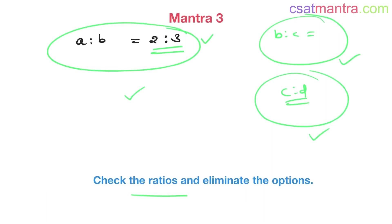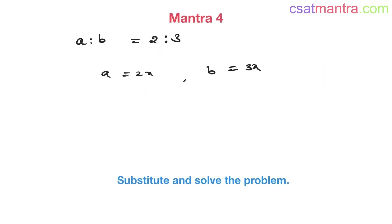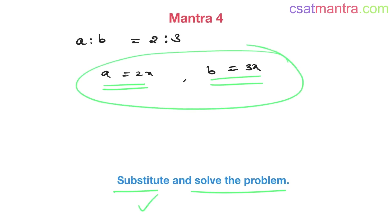Make use of the options and employ these mantras. The last mantra: substitute a as 2x and b as 3x — if a is to b is 4 is to 5, then a is 4x and b is 5x. Substitute and solve the problem conventionally. Next, we'll go through solved examples using these mantras. So this is what you carry to the exam hall: compare values, check multiples, check the ratios, and substitute. You can solve any problem based on basics of ratios.